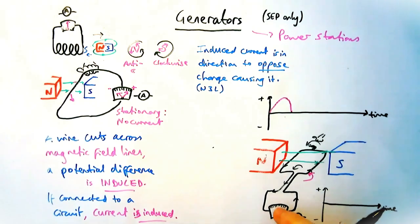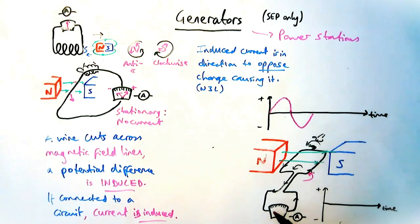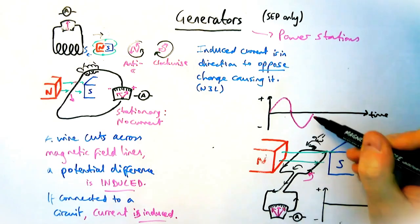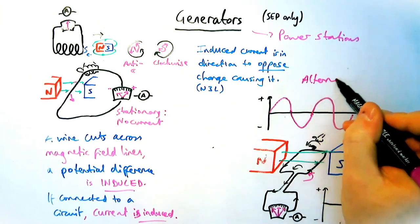It goes to zero when it's horizontal, and then it carries on turning. It's going to be maximum negative when vertical, and then keep on going, positive, negative, positive, negative, which we should know is alternating current because it's changing direction.